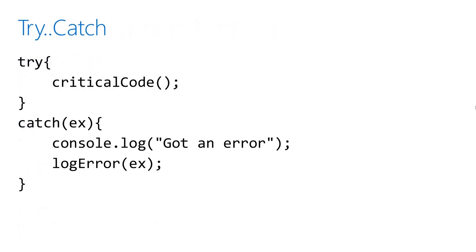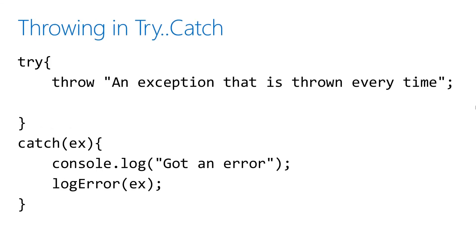In this example, we're using only try and catch. Imagine we have some critical code in a function called critical code — this is code that could potentially throw an exception. If that happens, we'll catch the exception in the catch block. First, it'll log an error to the console. Then it'll call a function to log the specific exception that happened, so that we can look at it later. In this example, we're throwing the exception ourselves, so when it gets caught in the catch block, it'll print to the console and log the error for us to read later.